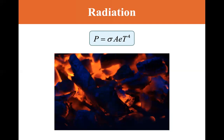Every second, approximately 1,370 joules of electromagnetic radiation from the sun passes perpendicularly through each square meter at the top of the Earth's atmosphere. The radiation is primarily visible, infrared, and ultraviolet. We'll get to infrared and ultraviolet when we get to electromagnetic waves in chapter 33.